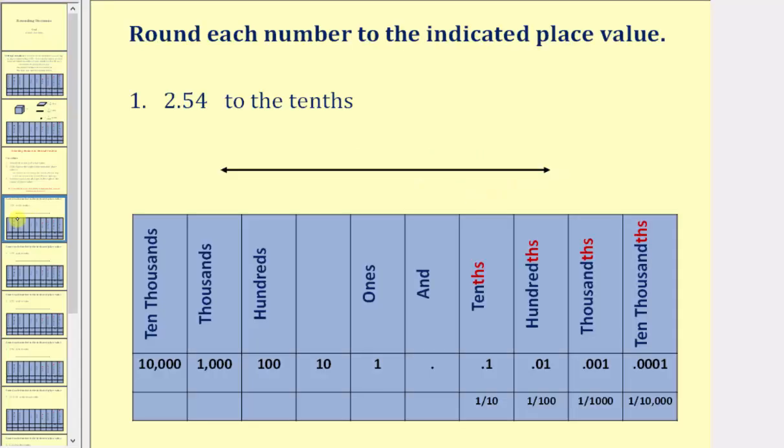In our first example, we want to round 2.54, or 2 and 54 hundredths, to the tenths place value.